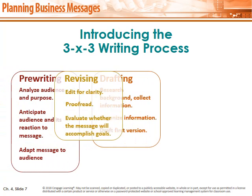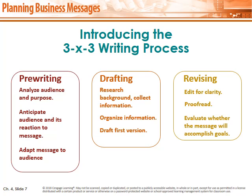Introducing the 3x3 writing process. It consists of three phases. The first phase is pre-writing: analyze the audience, clarify why you are writing, anticipate the reaction to the message, and adapt the message to your audience. The second phase is drafting: research background, collect information, organize your information, and write your first version. The third phase — truly important — is revising: edit for clarity, proofread, read and edit until it is clear, and evaluate whether the message will accomplish the goal. If the reader would get the idea and your goal would be achieved, your message is clear. Then send it.